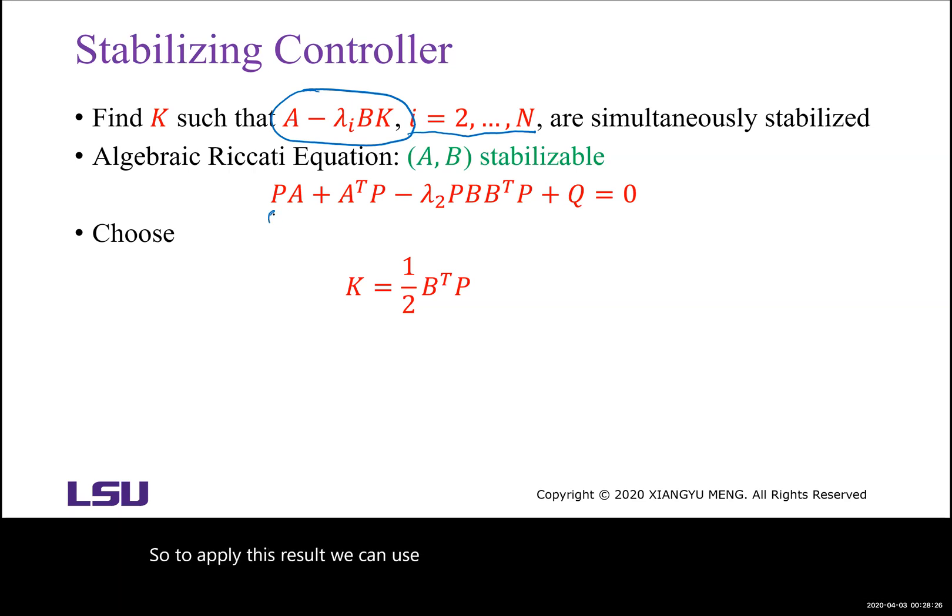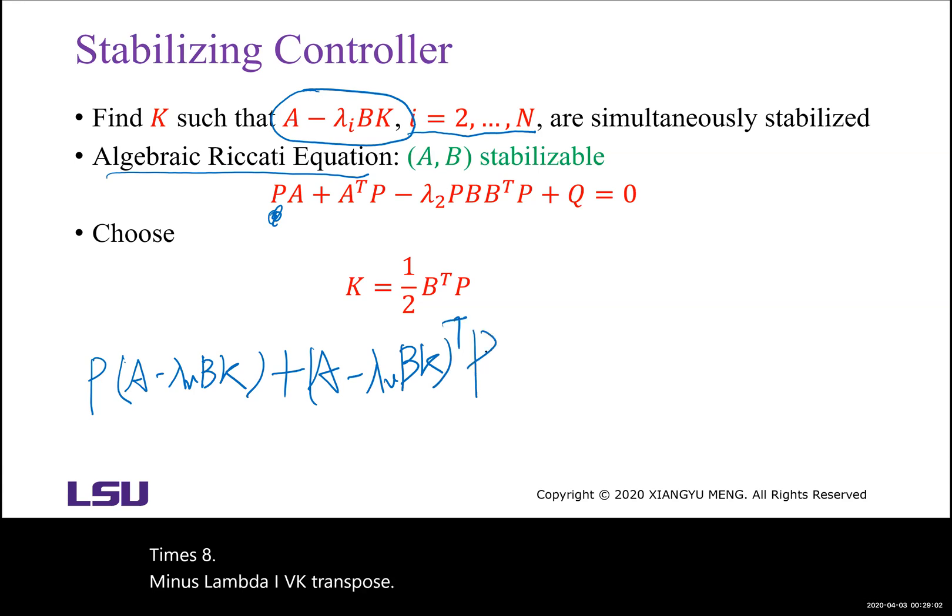To apply this result, we can use the P we found through the algebraic Riccati equation. Then we want to verify if all eigenvalues of A minus lambda i BK have negative real parts. We can use P times A minus lambda i BK plus A minus lambda i BK transpose times P. If this one is less than 0, then A minus lambda i BK has all eigenvalues with negative real parts.